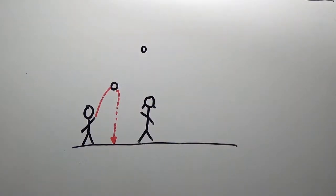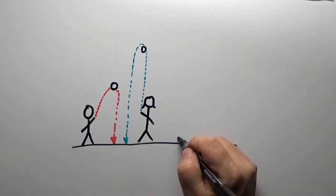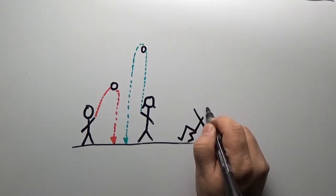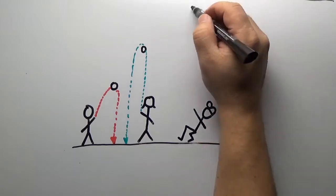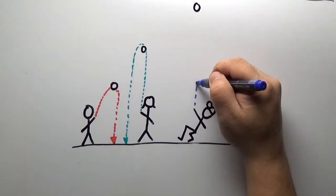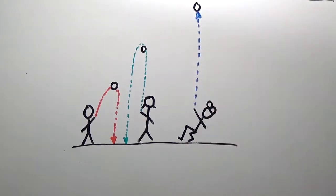If my friend throws a ball in the air harder than I did, the same thing happens, but the ball goes a little bit higher. What would it take for someone to throw the ball so hard, so fast, that it keeps on going and never comes back down?